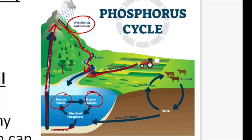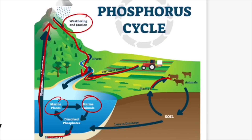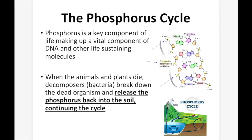On land, phosphorus is absorbed by plants as PO4³⁻. Animals then eat the plants, and the phosphorus is transferred to them. When animals die, the phosphorus returns to the soil, where it can be taken back up by plants or sent via drainage back to waterways and sediment to recycle further. Phosphorus is a key component of life, making up a vital component of DNA and other life-sustaining molecules — it makes up the backbone of each strand of DNA.